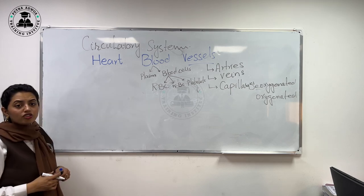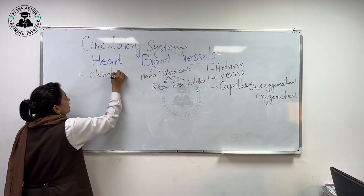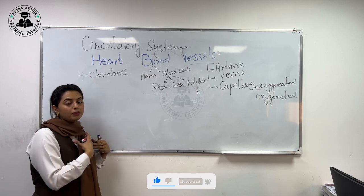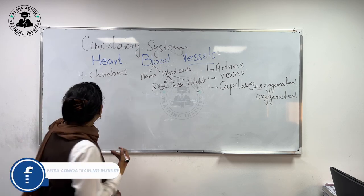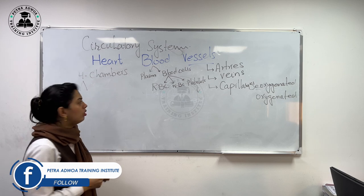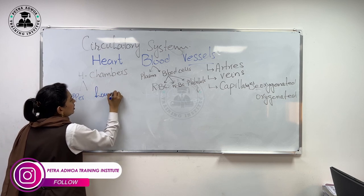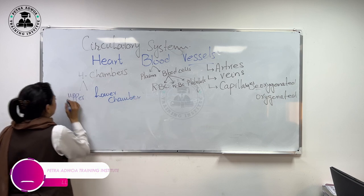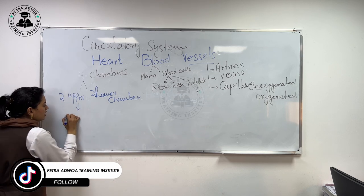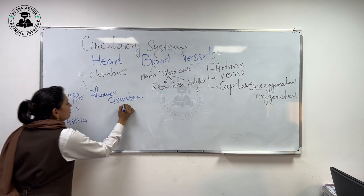Now let's talk about the heart. The heart consists of four chambers. Heart is the circulatory organ — the main pumping organ. When the heart pumps, blood moves with pressure to all other parts of our body. We have two upper chambers and two lower chambers. The upper chambers are called atria, and the lower chambers are called ventricles.